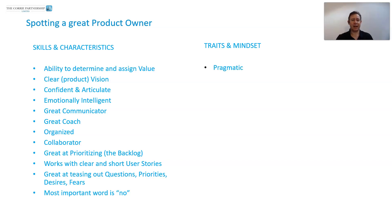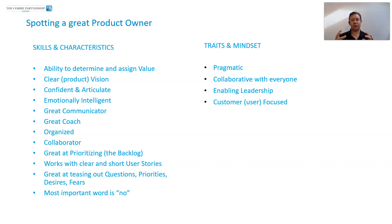Some of the traits and mindsets of a great product owner: pragmatic, collaborative with everyone, enabling leadership, and definitely customer and user focused. If stakeholders are demanding something you and your team know isn't right, one of the best ways to deal with that is to get empirical evidence — get data from users, put options in front of them, and they'll tell you what they want. Take that back to the stakeholders and they'll drop that vanity feature almost immediately.